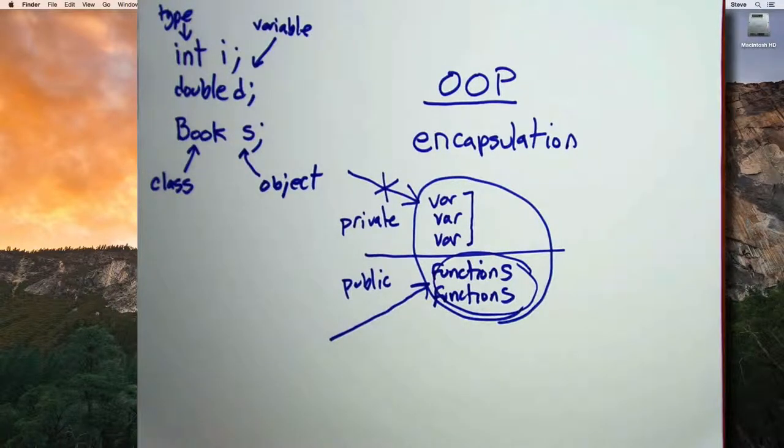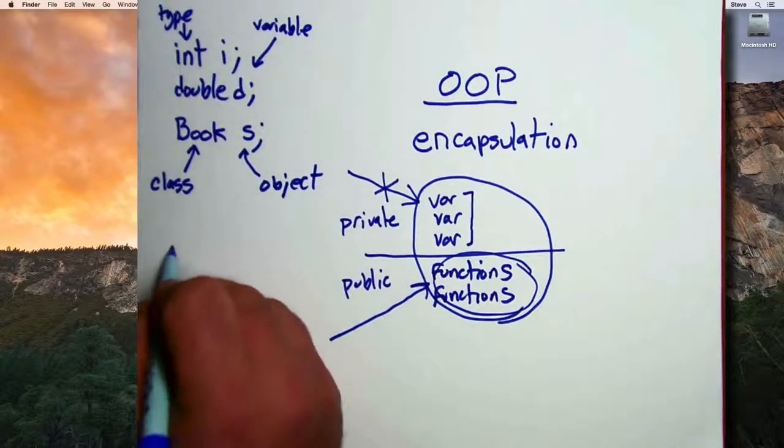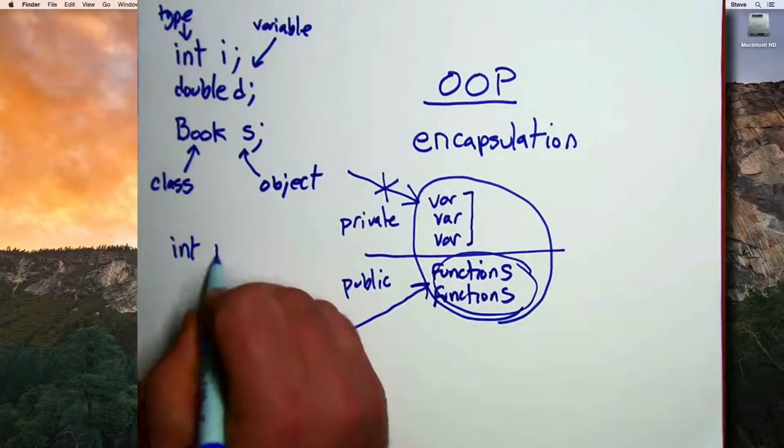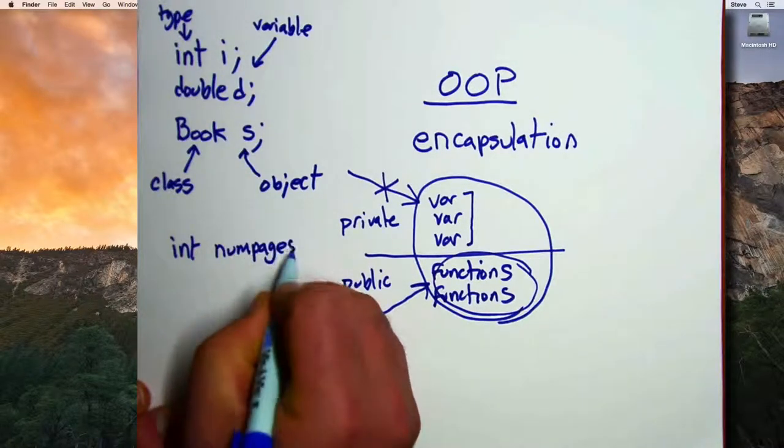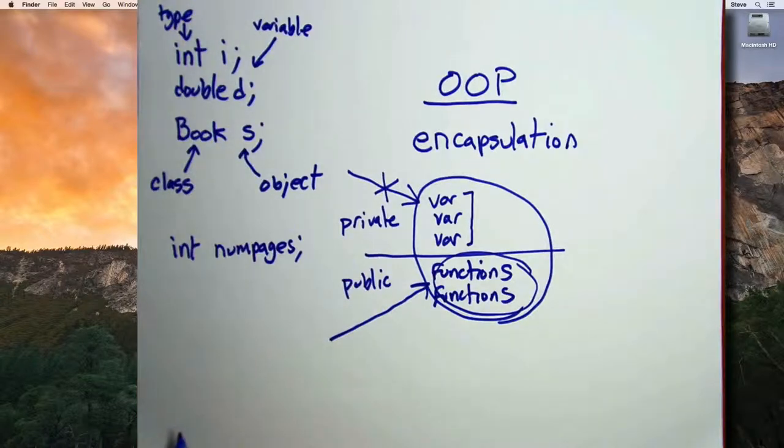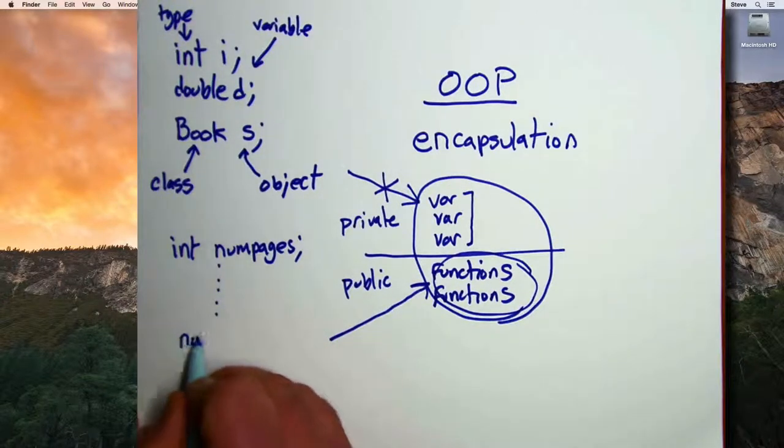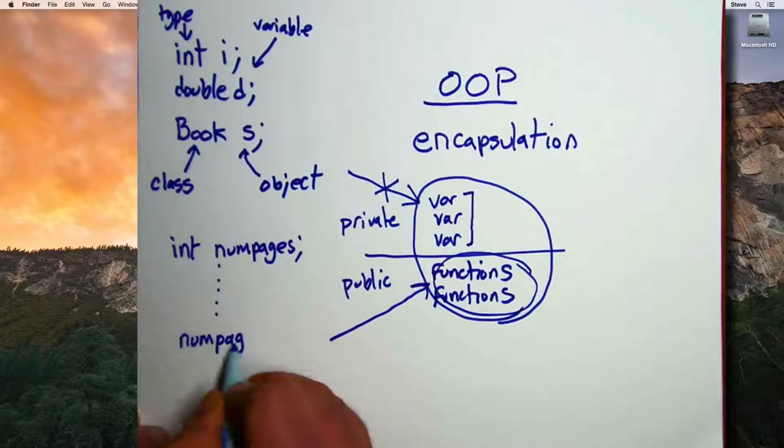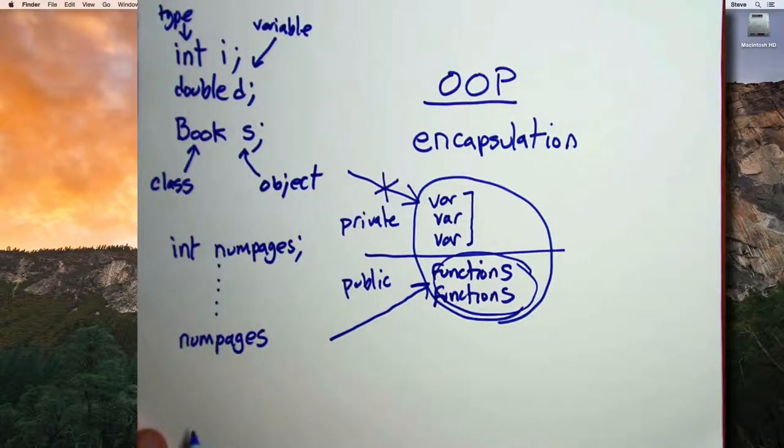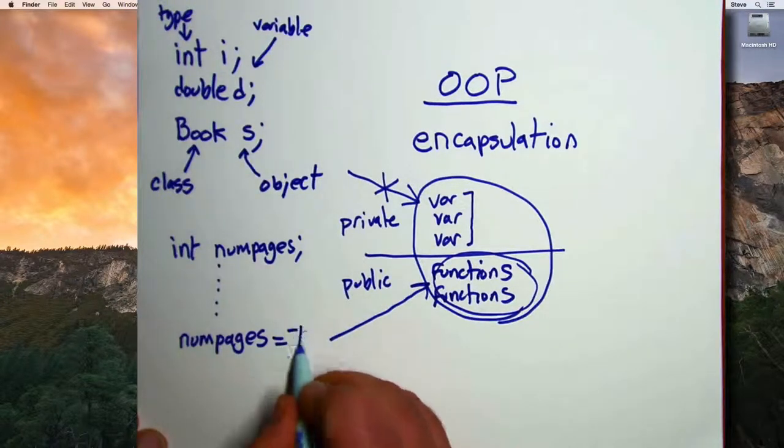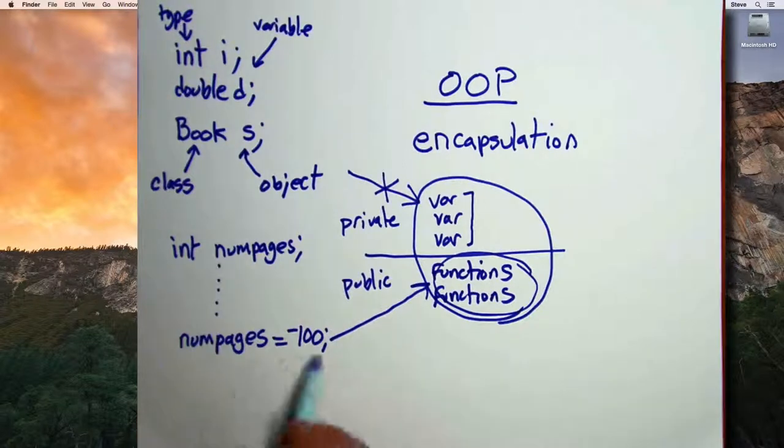For example, let's say I had an integer called numPages that represented the number of pages in the book. And I write a bunch of functions in code that deals with the number of pages and calculating where to put the table of contents and a bunch of other things. And then let's say that due to a bug or misunderstanding, someone accidentally sets the number of pages to negative 100.